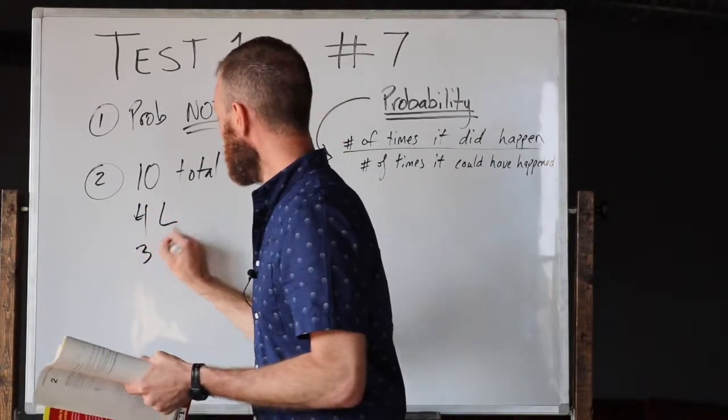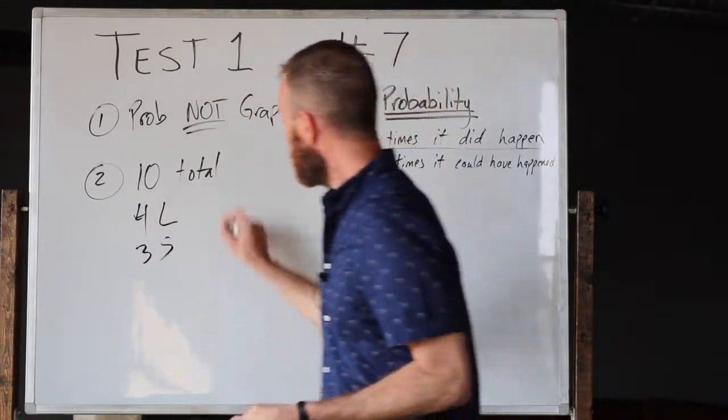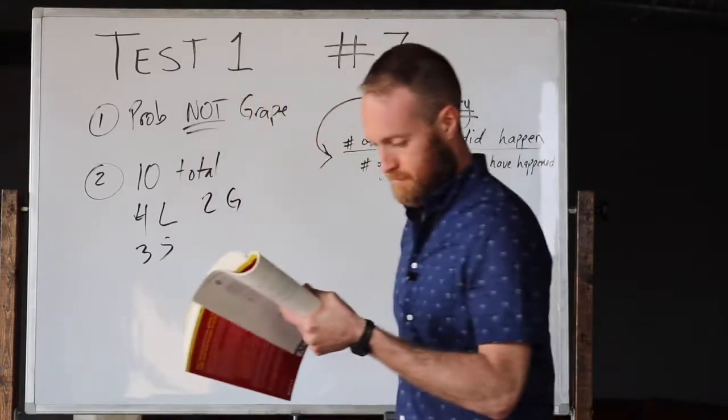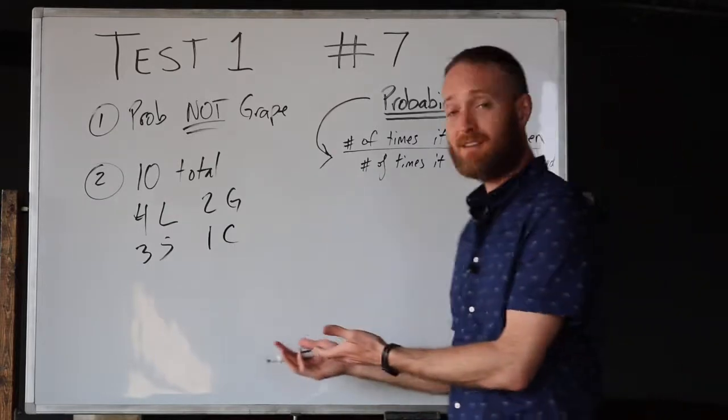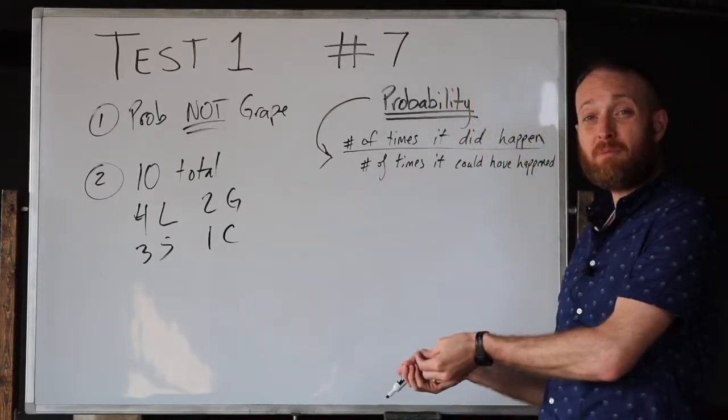There are four lemon, three strawberry, two grape, and one cherry. Now in this situation, we're only trying to find the probability that...